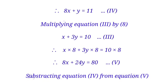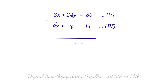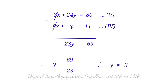Subtracting equation 4 from equation 5: 8x plus 24y equal to 80, minus (8x plus y equal to 11). Due to subtraction, signs of 4th equation change, giving 23y equal to 69. Therefore y equal to 69 divided by 23, so y equal to 3.